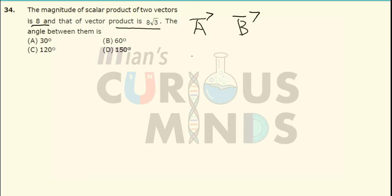Then the magnitude of the scalar product, that is a dot b, its magnitude over here will be equal to magnitude of a, magnitude of b, into cos theta, which is given as 8.